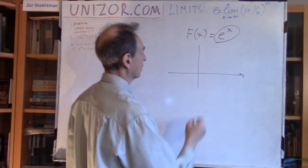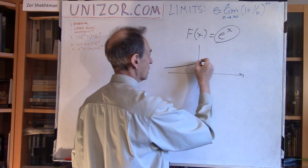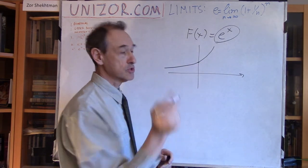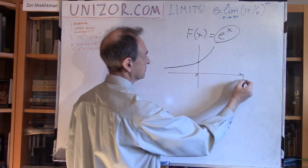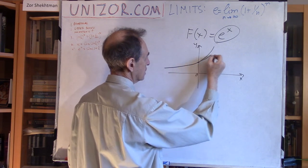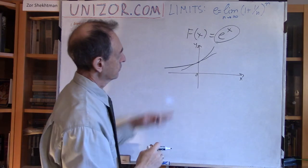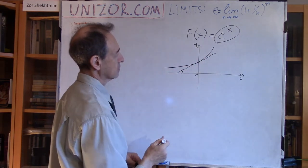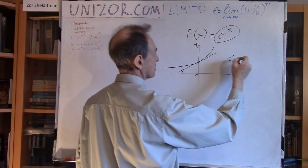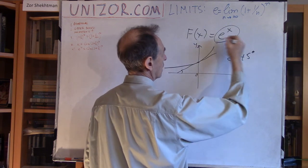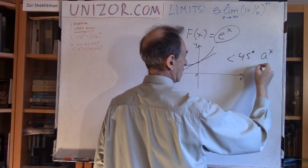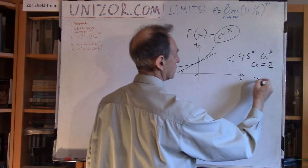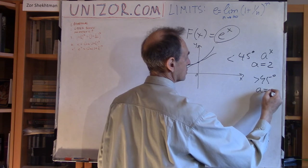If you recall, these exponential functions have a shape something like this with the base greater than one. I introduced the concept of steepness at point zero, which is basically a characterization of the angle of the tangential line at point zero. Apparently this angle is less than 45 degrees with the exponential function with base equal to 2, and it's greater than 45 degrees when the exponential function has a base equal to 3.